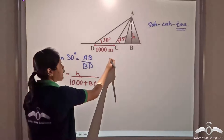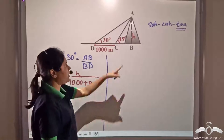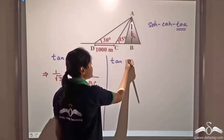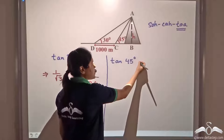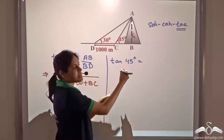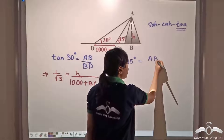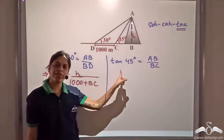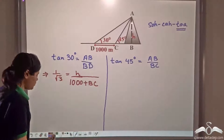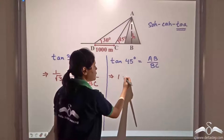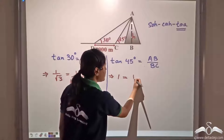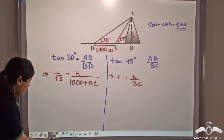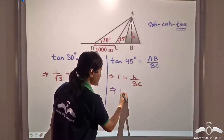Now let us consider the other triangle. In triangle ABC, tan forty-five degrees is equal to opposite by adjacent, that is AB by BC. We know that tan forty-five degrees equals one, so this implies one equals H divided by BC. From here, we have BC equal to H.